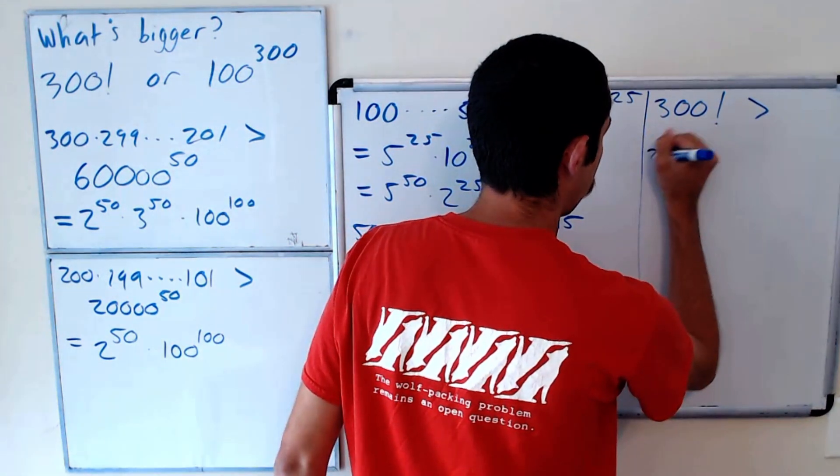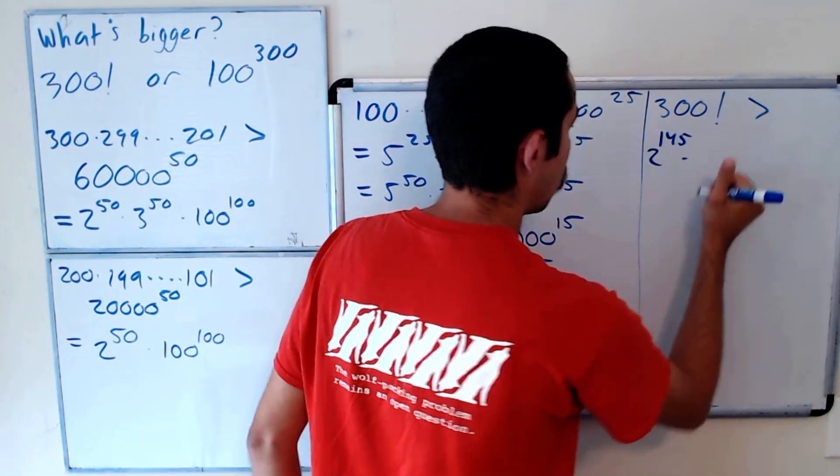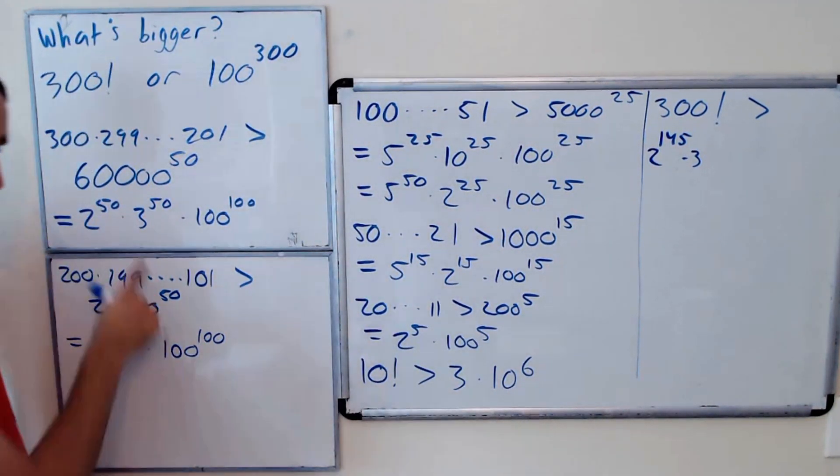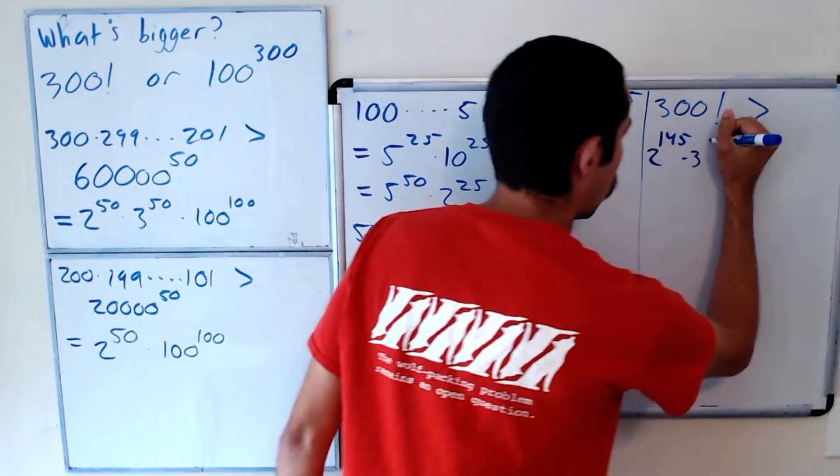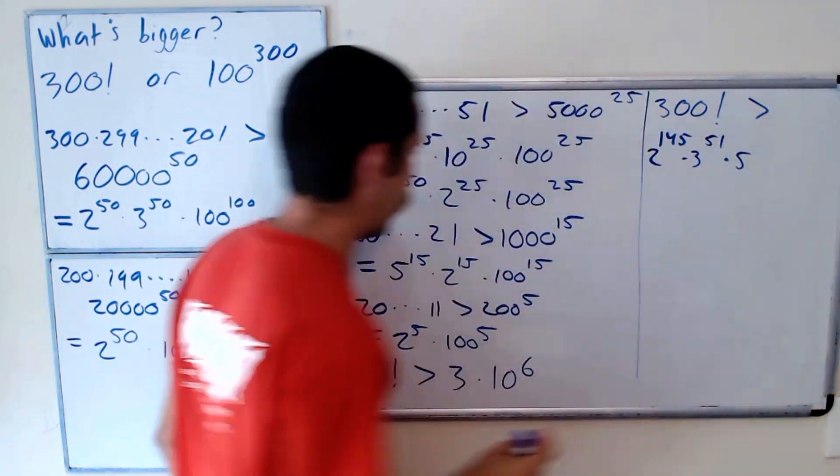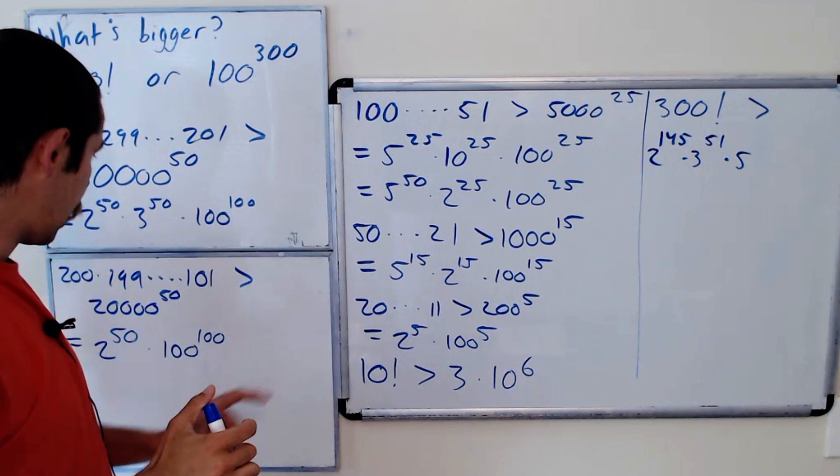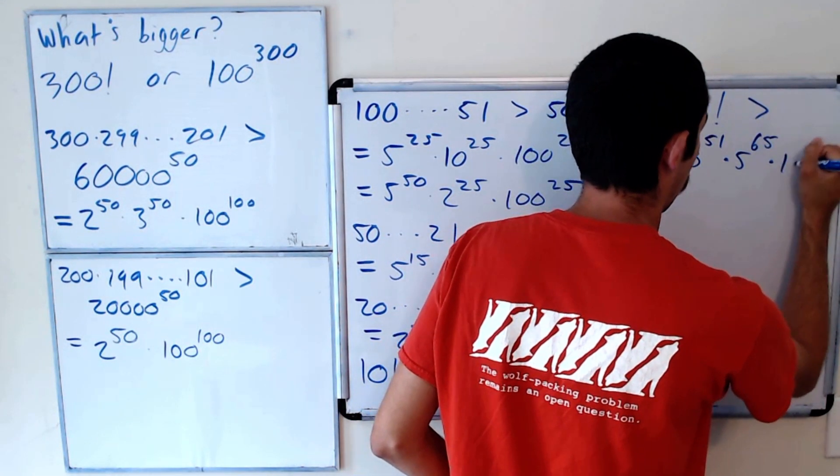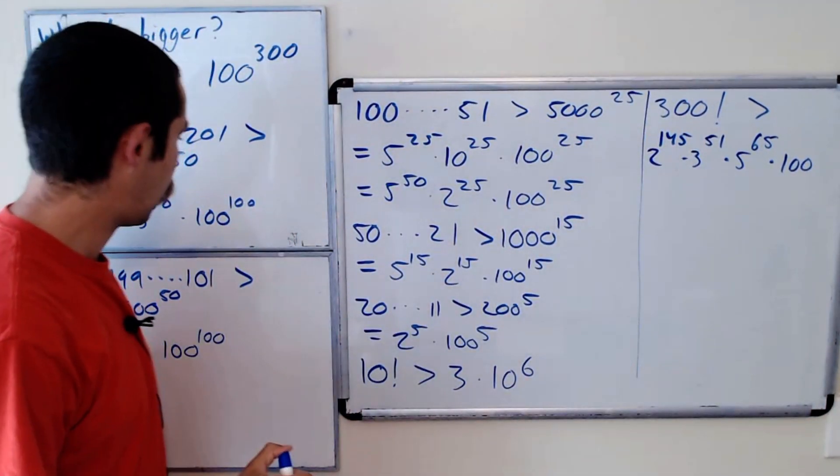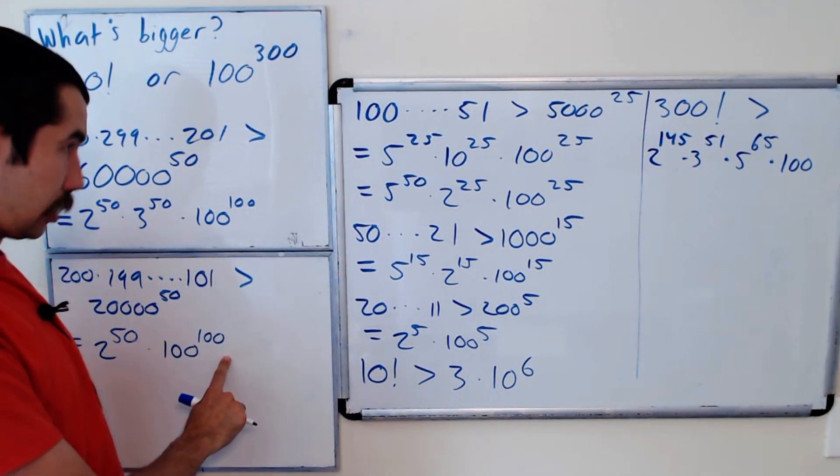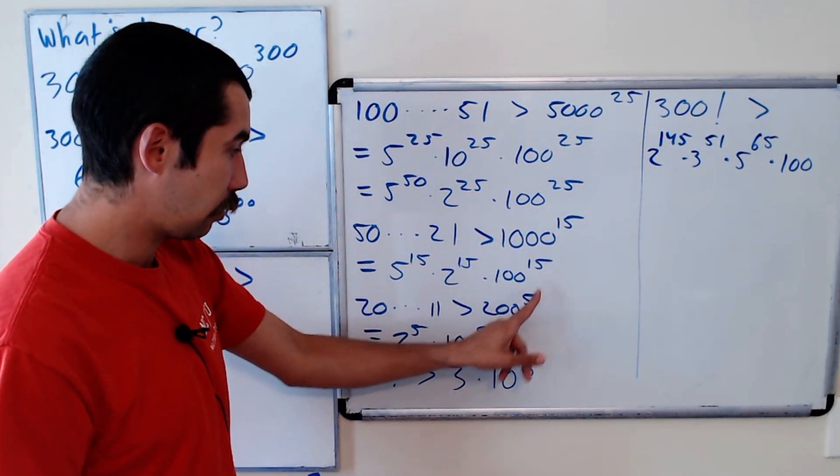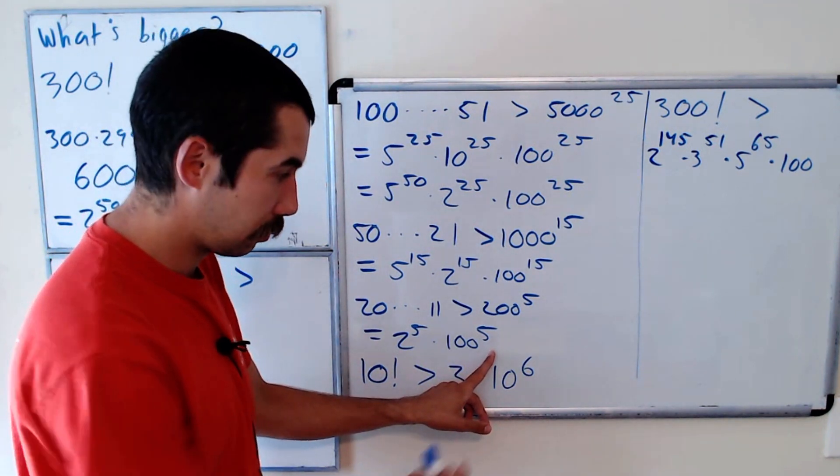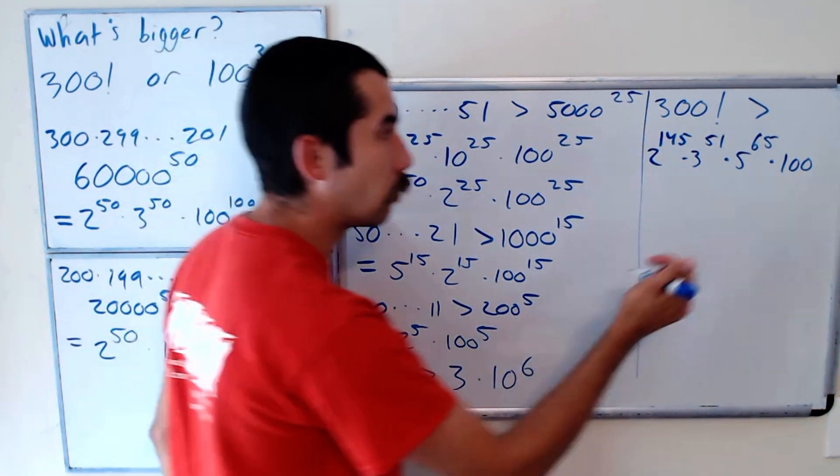So 2 to the 145 times 3 to the 51. So 51 times 5 to the 50 plus 15 is 65 times 100 to the 100, 200, 225, 240, 245, 248, right? This is three more. So 248.